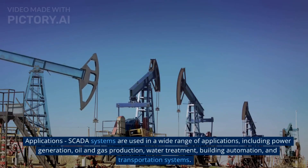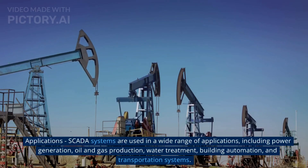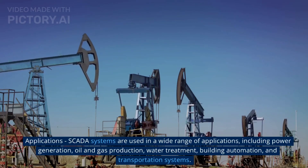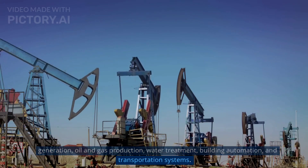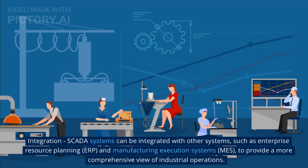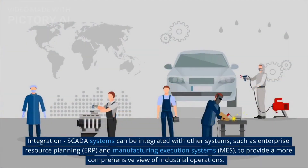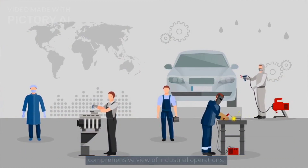SCADA systems are used in a wide range of applications, including power generation, oil and gas production, water treatment, building automation, and transportation systems. SCADA systems can also be integrated with other systems, such as Enterprise Resource Planning (ERP) and Manufacturing Execution Systems (MES), to provide a more comprehensive view of industrial operations.